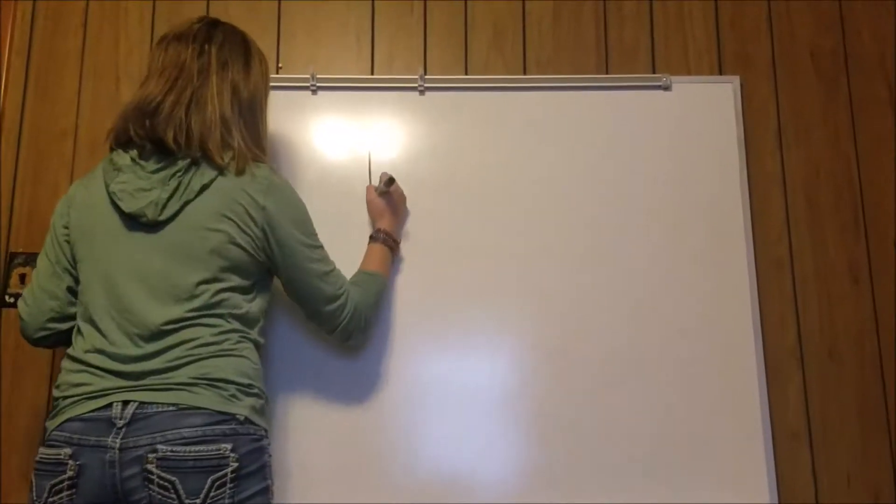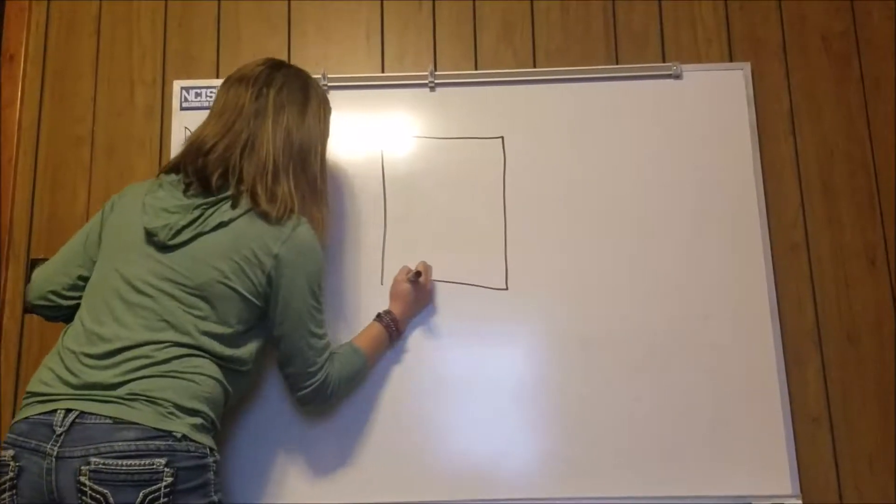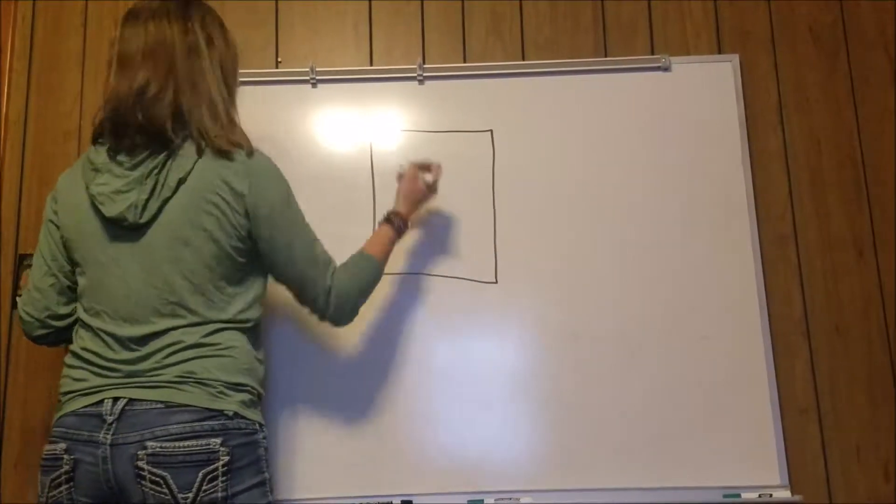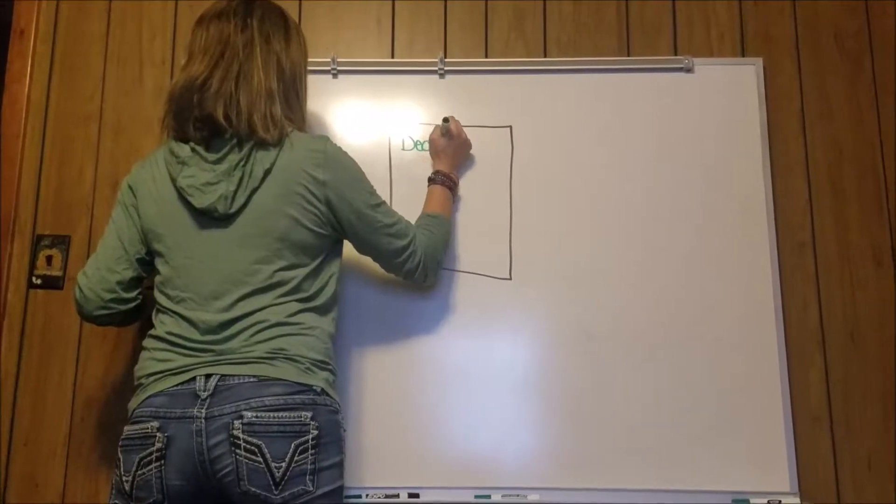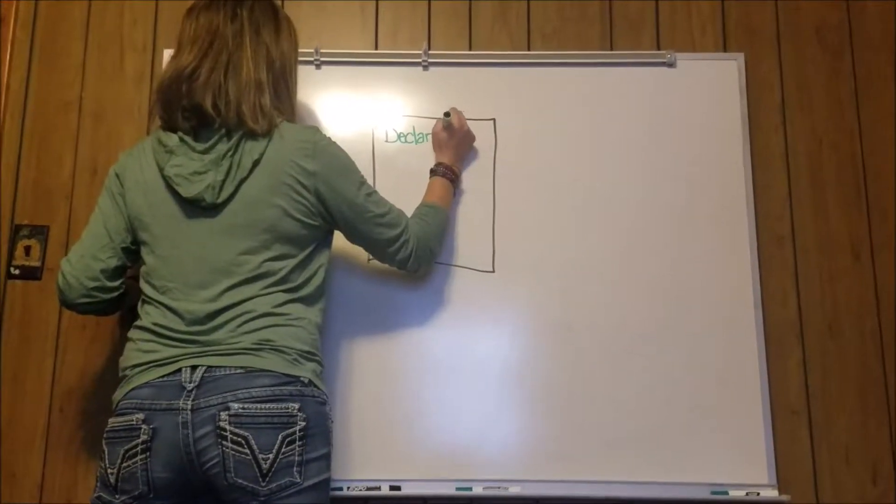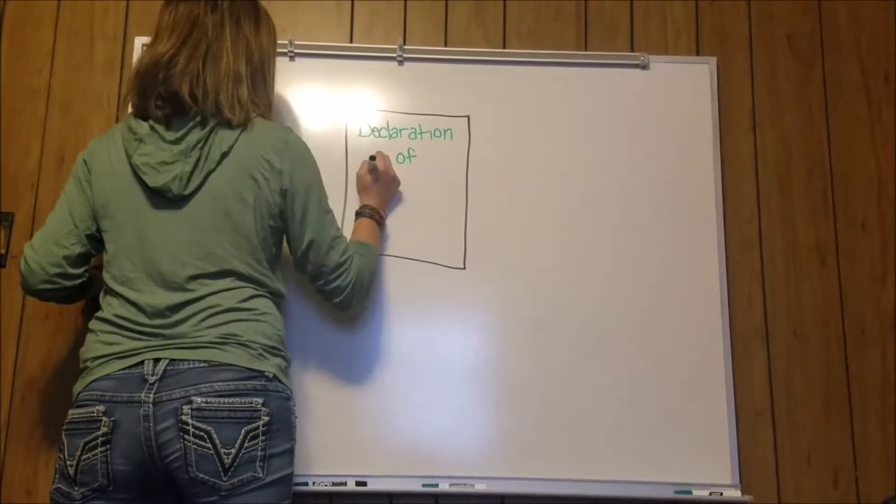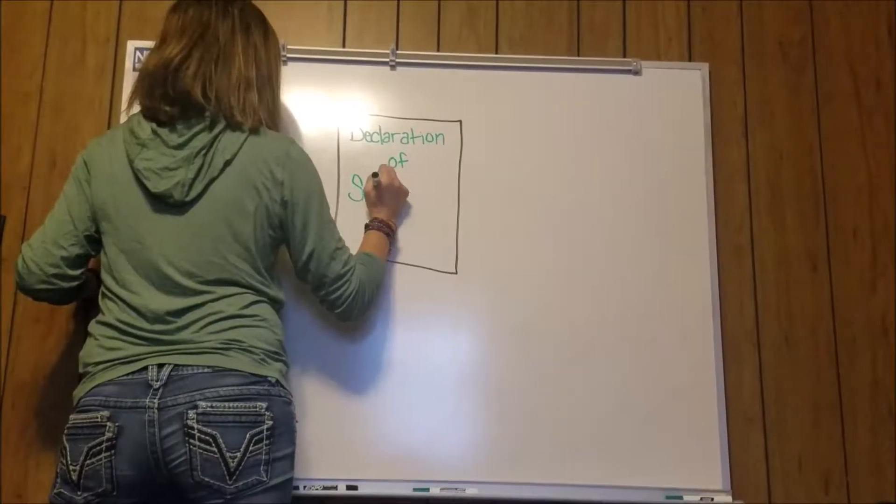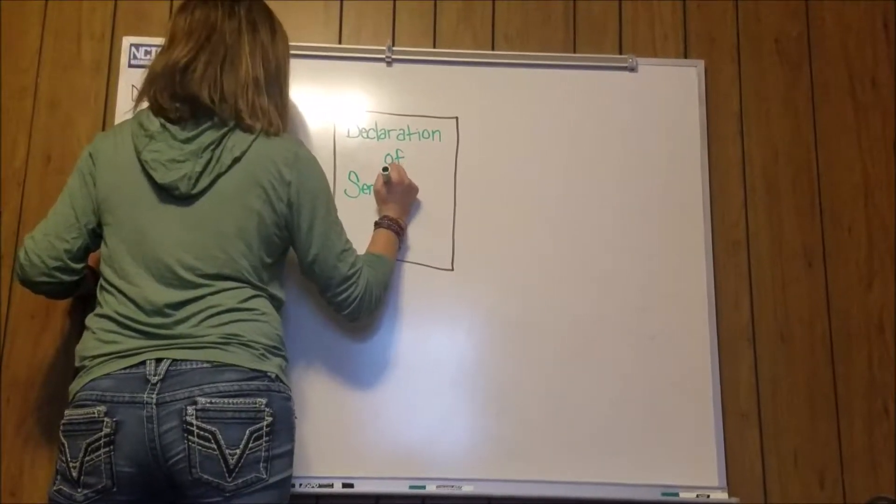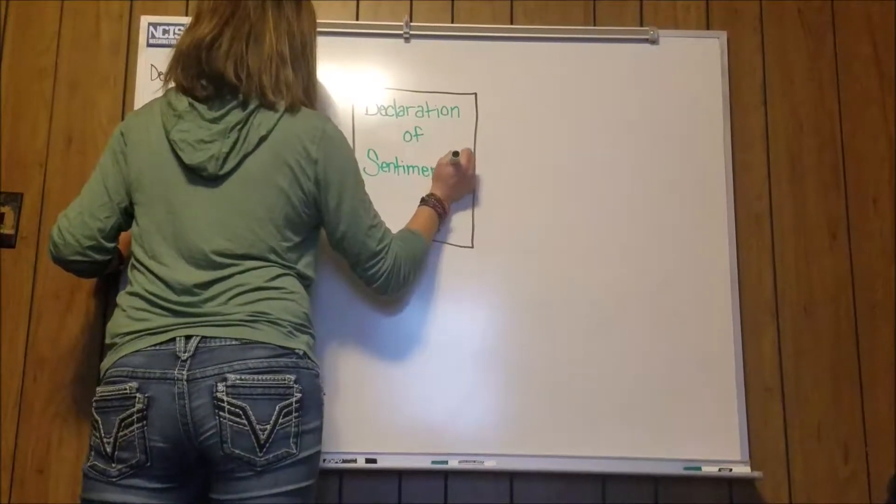Elizabeth Cady Stanton and Lucretia Mott created the first women's convention in 1848 after being enraged that women were not allowed to participate in the abolitionist conventions. At this convention, named Seneca Falls Convention, they made a document called the Declaration of Sentiments. This explained the social injustice towards women and the social justice that they wanted.